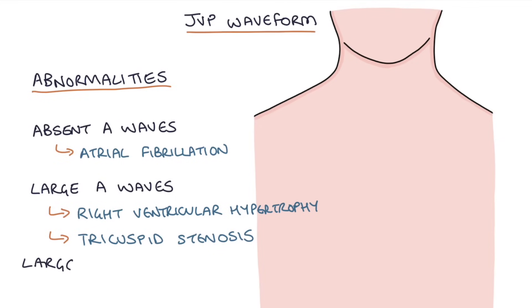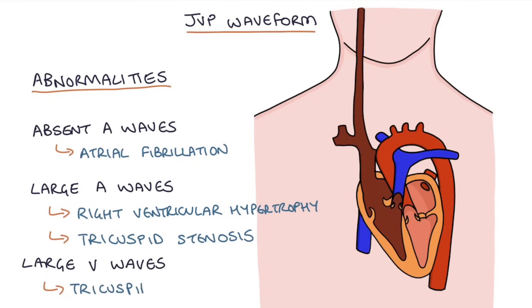There's only one cause for large V waves, and that's tricuspid regurgitation. In tricuspid regurgitation, right ventricular contraction will lead to blood flowing back through the tricuspid valve and up into the right atrium, superior vena cava, and internal jugular vein, and this will cause large V waves. This will also cause a loss of the X descent because the ventricular contraction increases the pressure in the right atria rather than relieving it, because blood is flowing back through the tricuspid valve into the right atria.